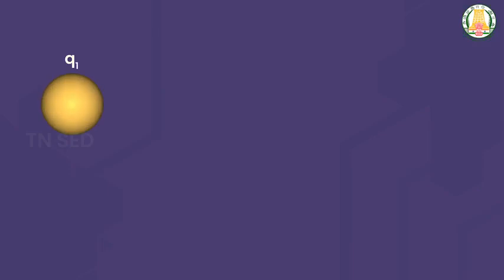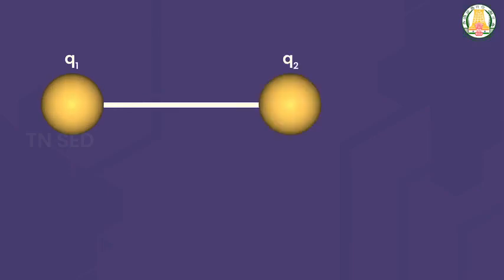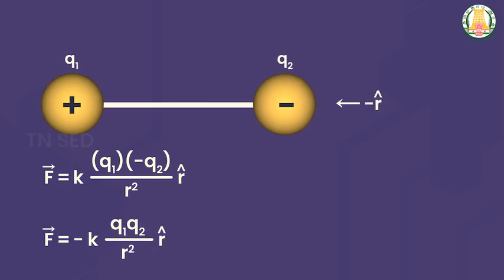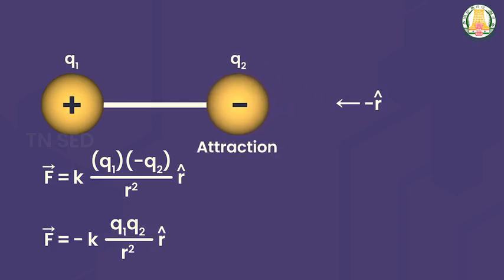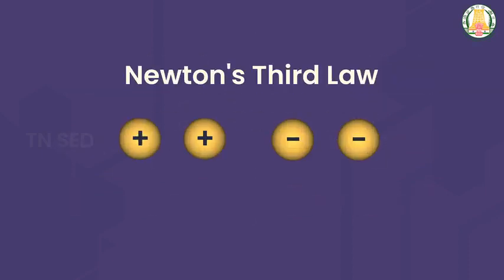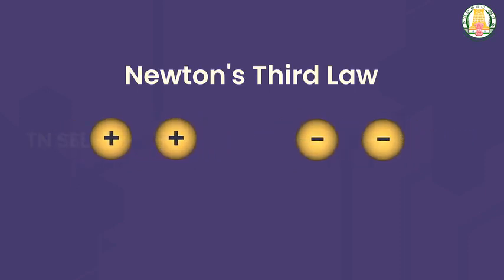For Coulomb's law, consider one positive charge Q1 and one negative charge Q2. Substituting into the vector formula, since Q2 is negative, the force on Q2 is in the −R̂ direction, meaning Q2 moves towards Q1 — attraction. For two positive charges, Q1 × Q2 is positive, so the force is in the +R̂ direction — the charges move away from each other, which is repulsion. By Newton's third law, the forces are equal in magnitude and opposite in direction, so both cases are consistent.